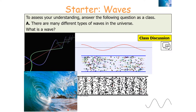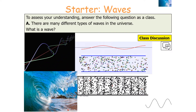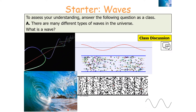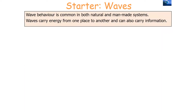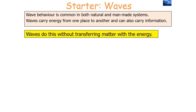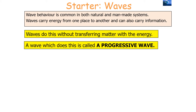There are many different types of waves in the universe, but we must consider: what is a wave? Wave behaviour is common in both natural and man-made systems. Waves carry energy from one place to another and can also carry information, but importantly, they do this without transferring matter with the energy. A wave which transfers energy but does not transfer matter is called a progressive wave.